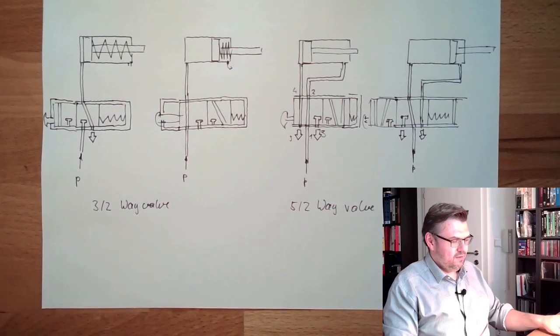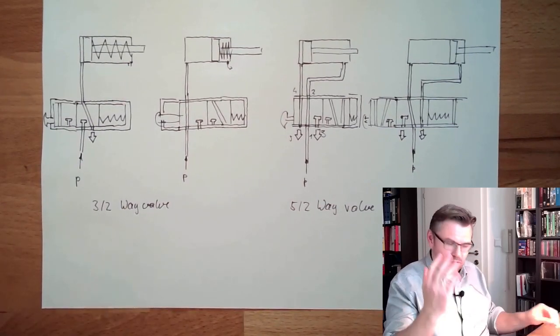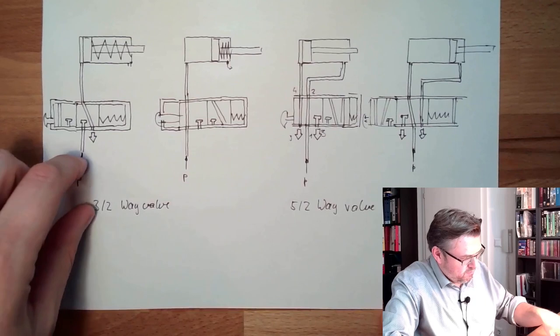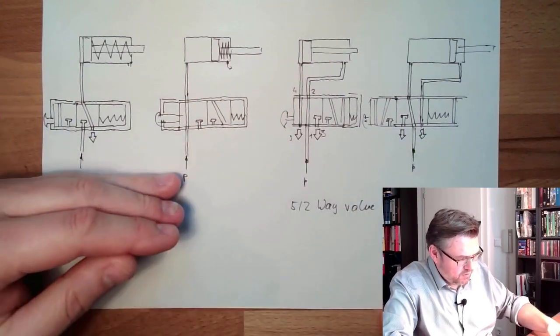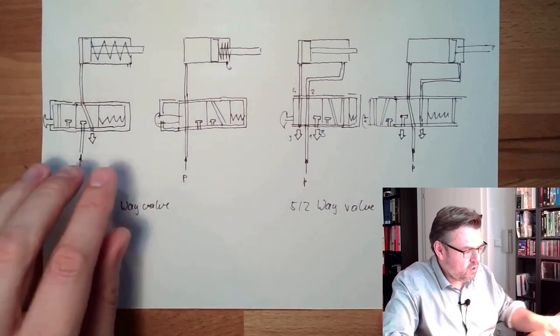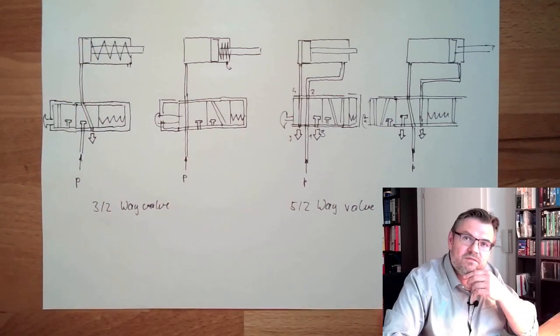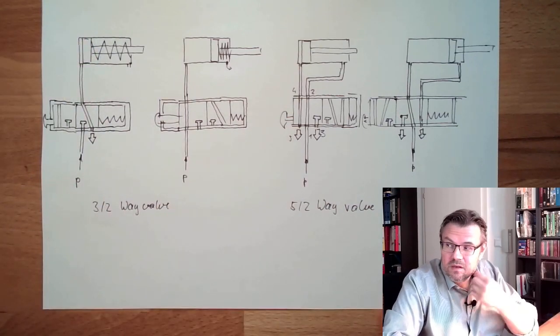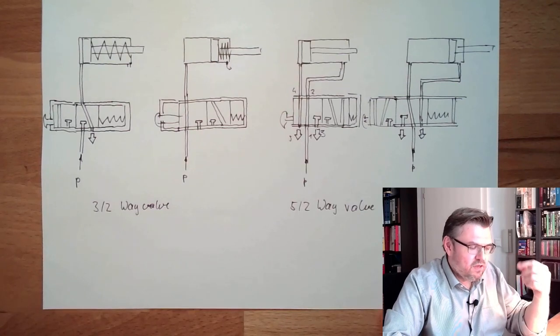So mainly controlling something. Here is the power generation part at the bottom. At the top there is the working part. And to control the working part we need basically some valves. And the most important valve are the way valves.